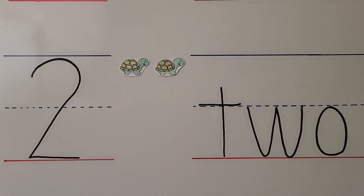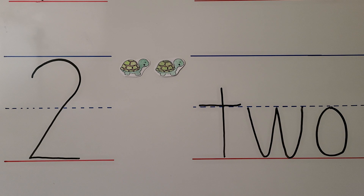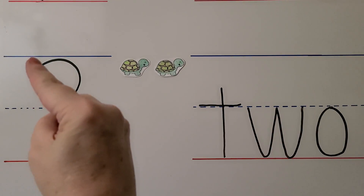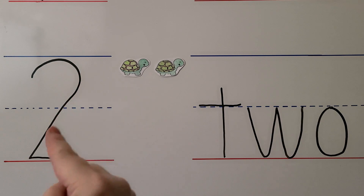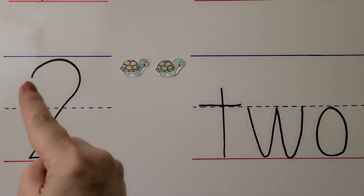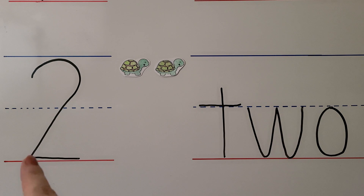Let's try the number two. This is the number two; this is the word two. For right-handed students, we start here, curve around with our finger to the line, and go straight across to the side. We start here, curve around, come down, and go across on the line.